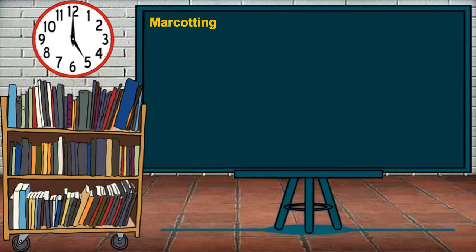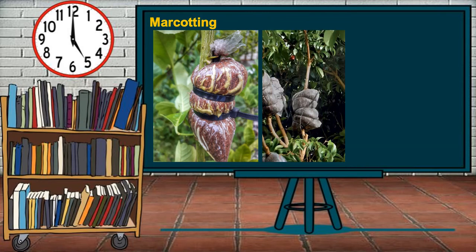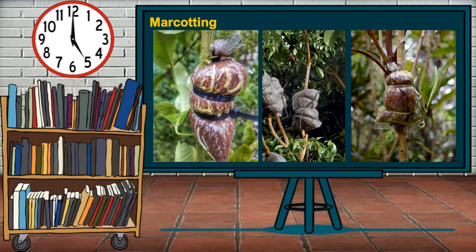Marcotting is another example of a plant that grows by an artificial method. In this method, a strip of bark from around the plant is removed. The stripped part is wrapped with soil and secured with a piece of cloth or plastic. When roots start to grow, the branch is cut off and planted in the soil. Marcotted plants bear fruits much earlier than trees planted from seeds.